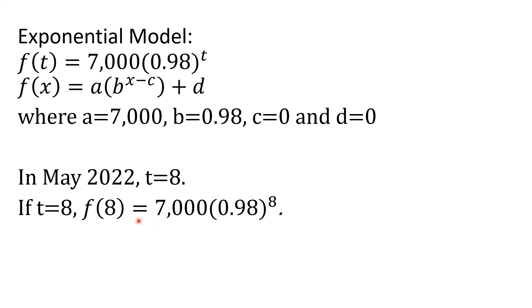For us to solve this, we will use the PEMDAS rule, which tells us that we need to simplify first the part with the exponent. So, before multiplying this by 7,000, use your calculator to solve for 0.98 raised to the 8th power. And you'll get 0.8508, rounded to the nearest 10,000th.